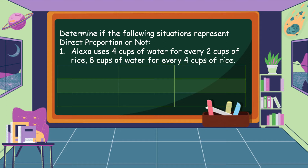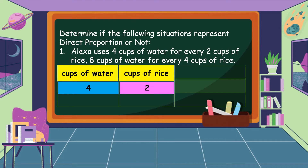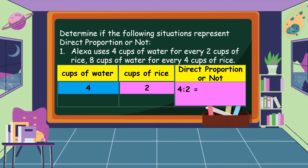To understand this situation, we're going to put it in a table. For the first statement — four cups of water for every two cups of rice — we can make our first ratio, and it is 4 is to 2.